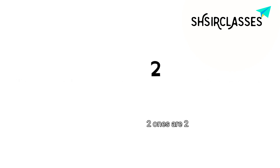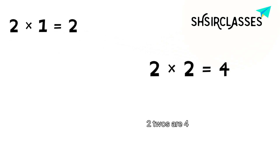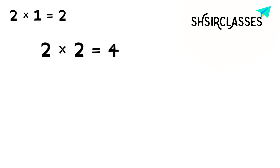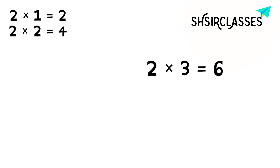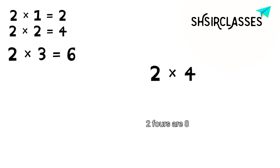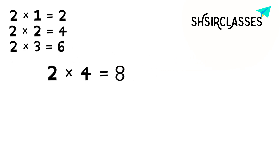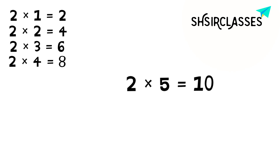2 ones are 2. 2 twos are 4. 2 threes are 6. 2 fours are 8. 2 fives are 10.